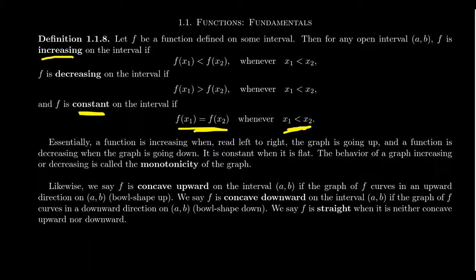In the English language, the word monotone typically means something like the following: if someone's talking in monotone, their voice level never changes. With the idea of increasing and decreasing, a function is monotone if it's always going up or it's always going down. Monotone means there's no change in this regard. If there's no change in the up-and-down behavior of the graph, that of course means it's constant.